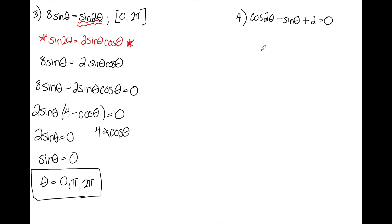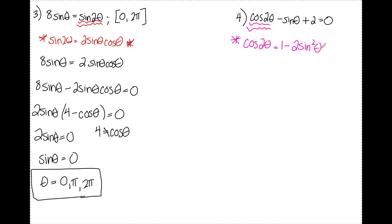For number 4, I have two trig functions, and I notice cosine of 2 theta — another double angle identity. Cosine of 2 theta has three different forms, and the most useful form here is the one that has only sine in it, so the equation becomes entirely in terms of sine theta. I know that cosine of 2 theta equals 1 minus 2 sine squared theta.